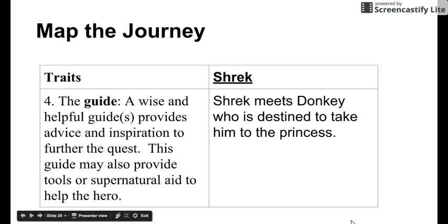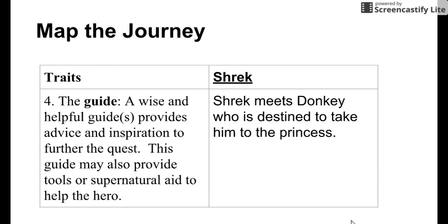I think this part is the guide — 'a wise and helpful guide provides advice and inspiration to further the quest.' So I wrote: Shrek meets donkey, who is destined to take him to the princess. Some people might argue this is an ally, so you can think about that yourself because that's another box on the chart, but I think he's more of a guide in this story.